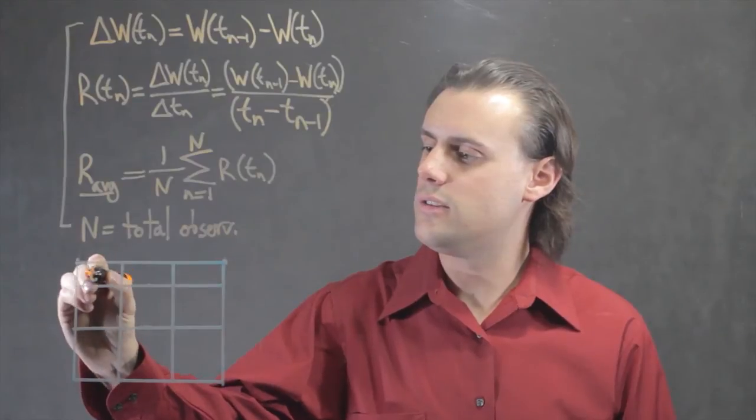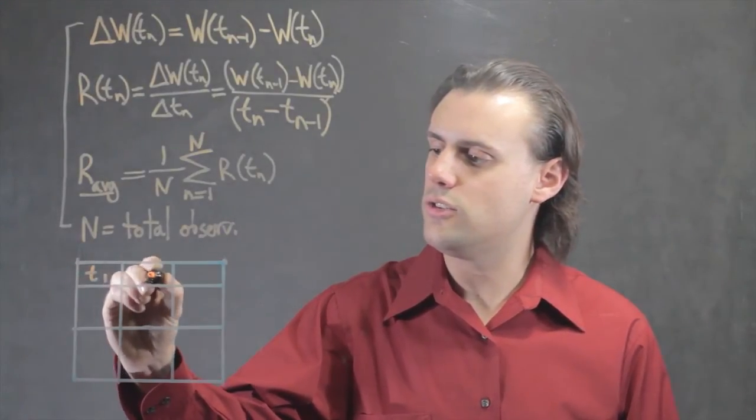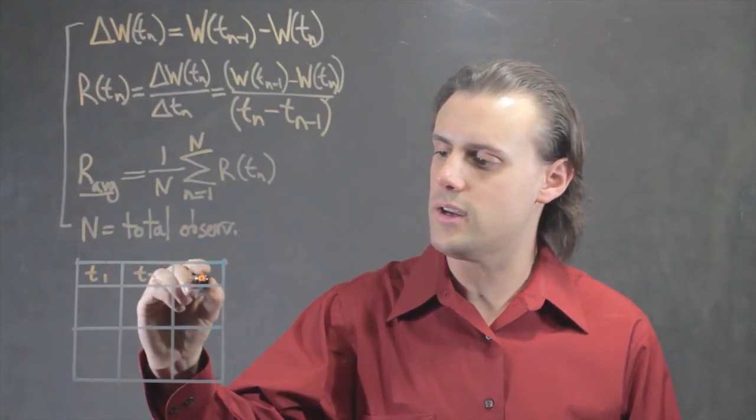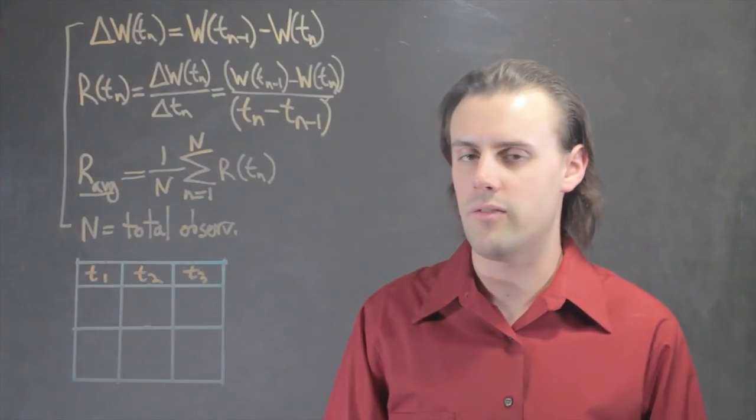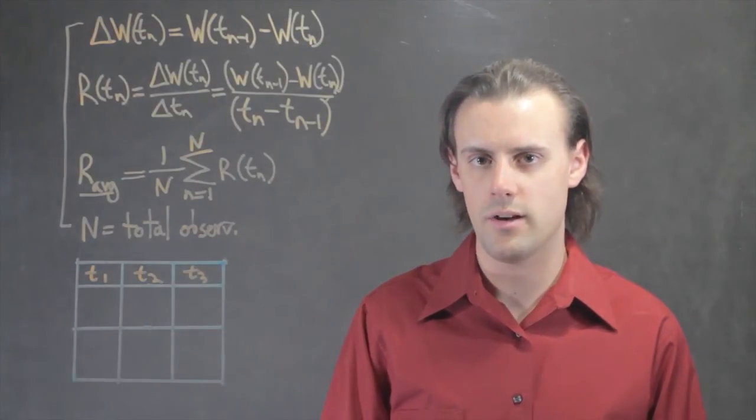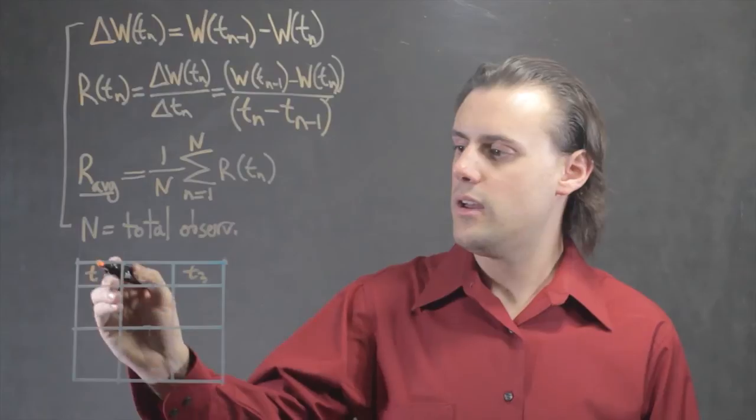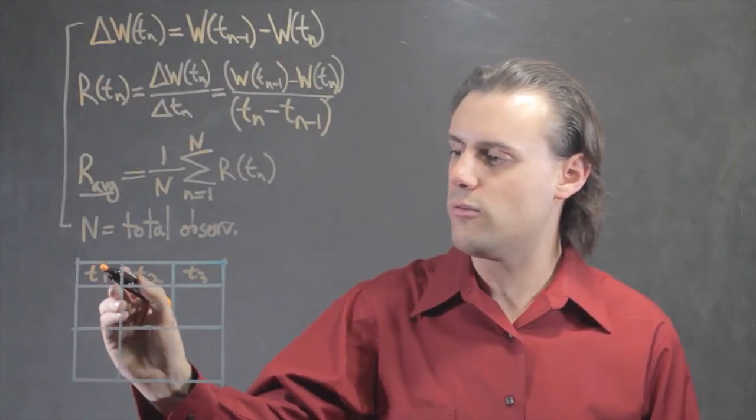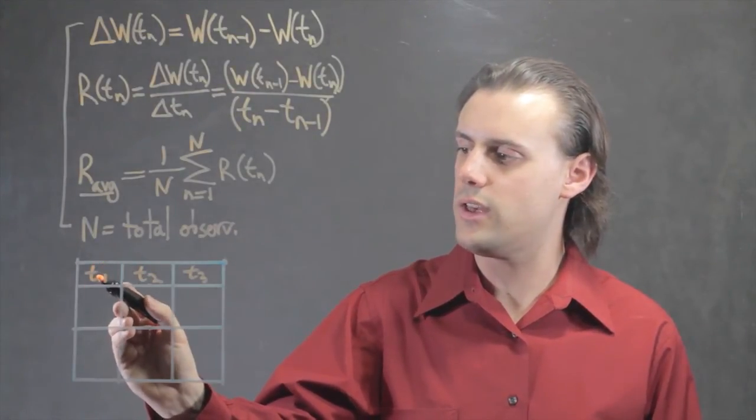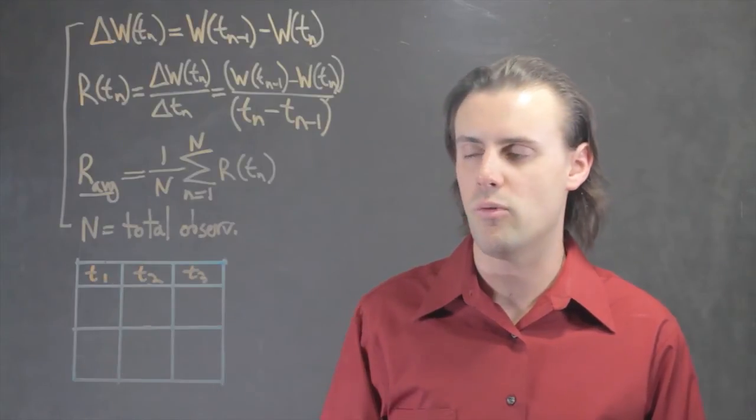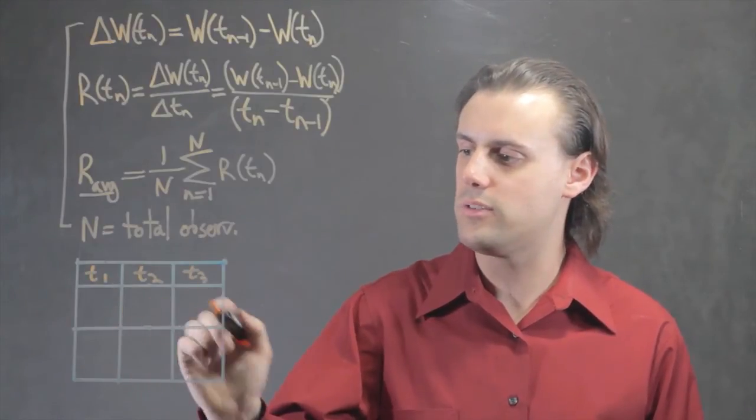I have T1, T2, and T3 here. For this example, I've made simply just three observations. And all the data in this column will be associated with any and all observations made at T1, and likewise for the subsequent times.